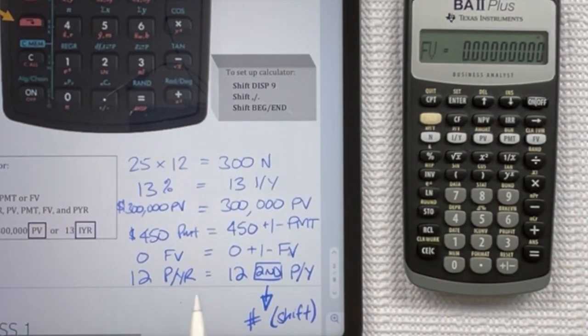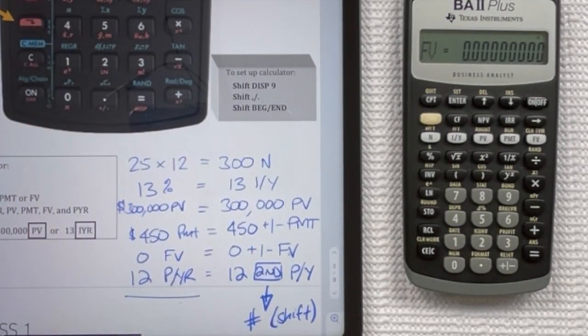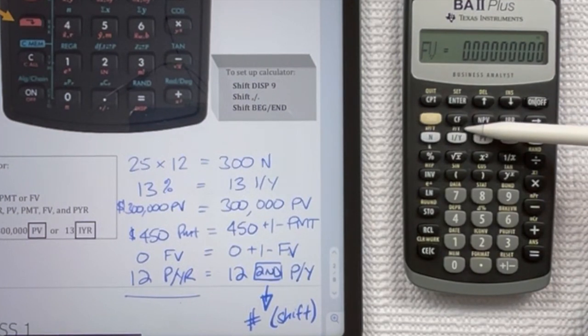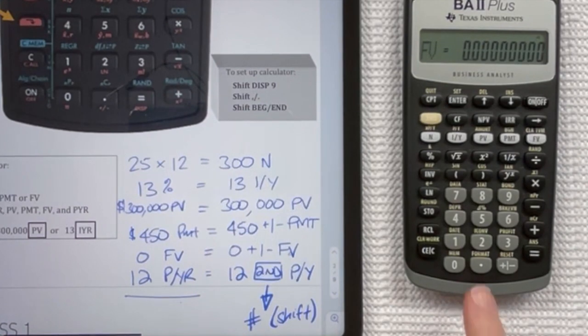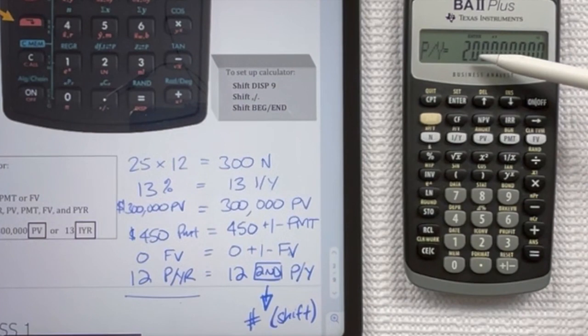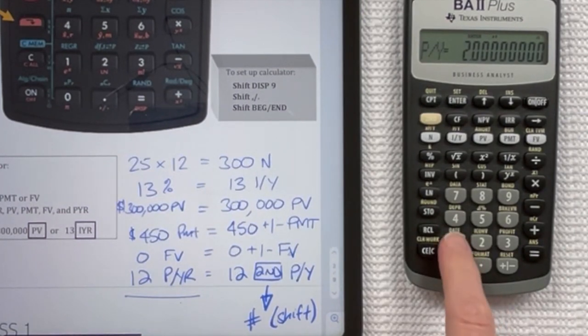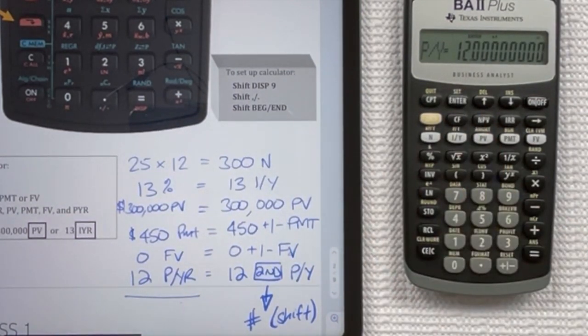And if you had 12 that you wanted to put in for your PYR, so 12 periods per year with this calculator, it's above the IY, and it's just PY instead of PYR. So you're going to hit your second function and PY, and you see that I have a 2 in there, and the enter has lit up here above it. So it tells you that you can change it if you want, we want to. We're going to hit 12 and enter, and you see that the PY now has 12 in it. So that's how you enter values into each of these locations.